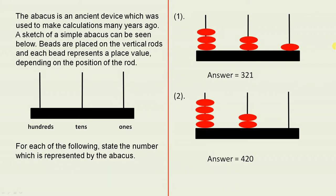The abacus is an ancient device which was used to make calculations many years ago. A sketch of a simple abacus can be seen below. Beads are placed on the vertical rods and each bead represents a place value, depending on the position of the rod.